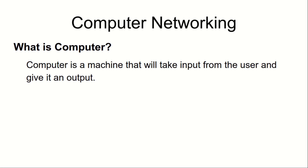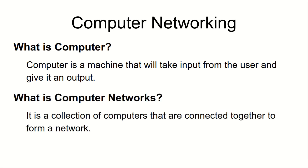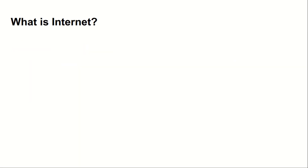After that, let's define what a computer network is. A computer network is a collection of all the computers that are connected together to form a network. So let's say there are two computers connected together — that connection forms a network. There can be 10 computers, there can be 20 computers. All the computers that are connected together form a network, and that network is called a computer network.